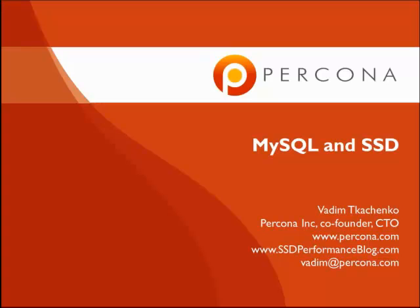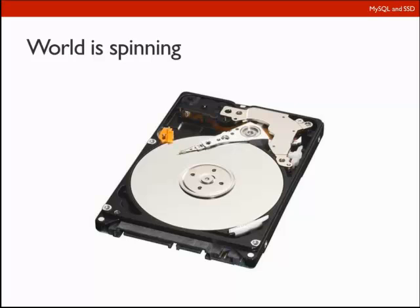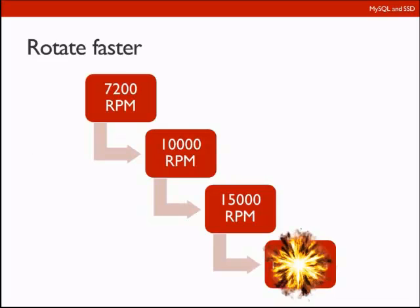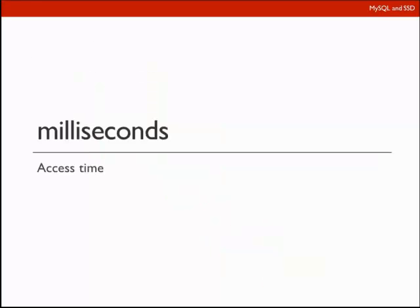As much as I like Flash, our world is still based on spinning drives. Most data is still stored on hard drives. Unfortunately, the performance of hard drives is limited by mechanical parts — a spinning disk, a moving head — and there is a physical limit on how much performance they can offer. We probably cannot rotate much faster; we've had 7,000, 10,000, now 15,000 RPM, but this is likely the ceiling. It still gives us only milliseconds of access time.